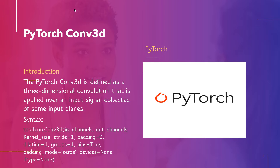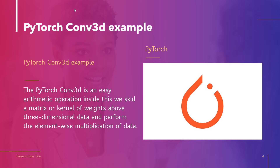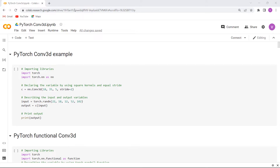Now let's move forward and discuss about the PyTorch Conv3D example. PyTorch Conv3D is an easy arithmetic operation. Inside this, we slide a matrix or kernel of weights over three-dimensional data and perform the element-wise multiplication of the data. Now we will understand the concept of PyTorch Conv3D with the help of an example.